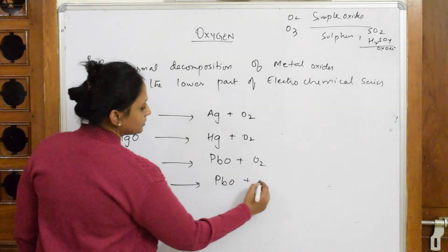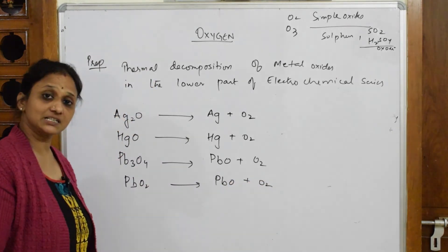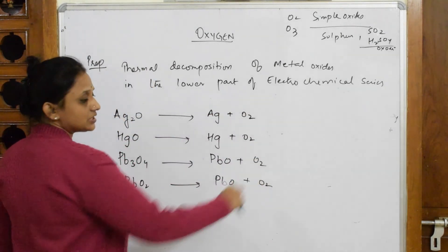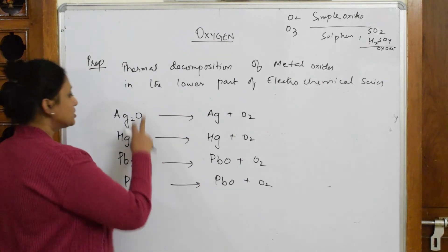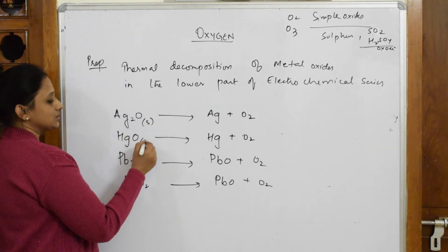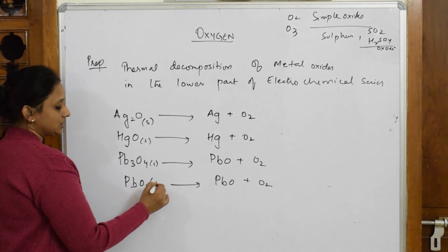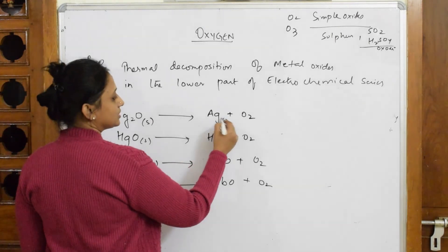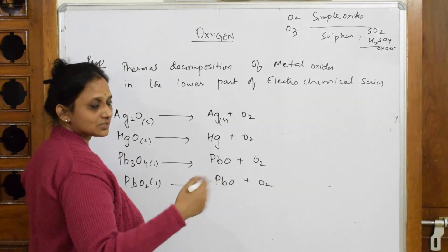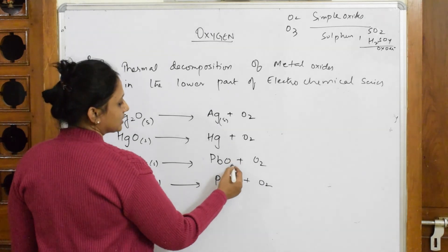We have prepared oxygen everywhere. We need to just balance it. Now when I write the physical states: this is solid, this is also solid - silver solid, mercury's physical state is semi-solid. This is again solid, and this is your gaseous state which is formed.